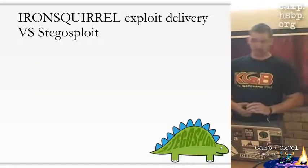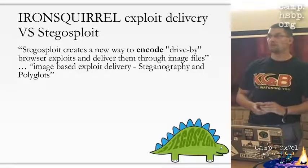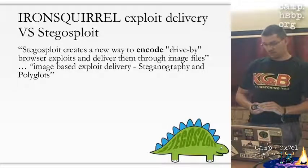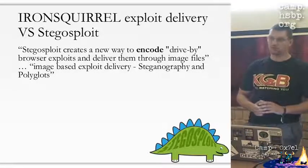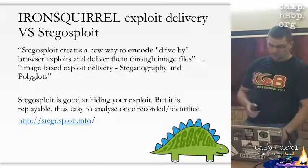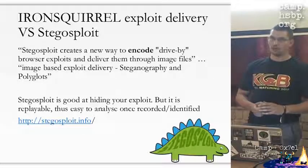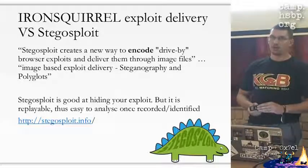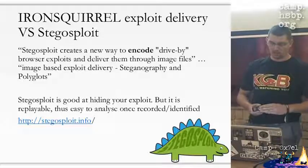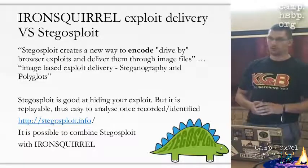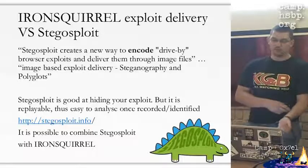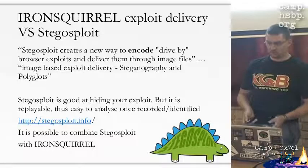Why is Iron Squirrel different from Stegosploit? The main difference is that Stegosploit encodes the browser exploit and uses steganography in images. Stegosploit is good at hiding your exploit code, but it is replayable - any determined attacker can replay it any time and debug where the exploit happens. There is no conflict here: Stegosploit can be combined with Iron Squirrel for extra effectiveness.